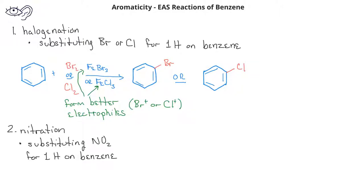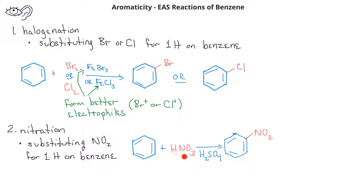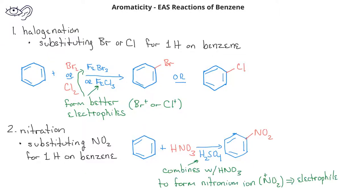Another reaction is nitration of benzene. This involves a benzene molecule reacting with a mixture of nitric acid and sulfuric acid, and it ends up substituting a nitro group, NO2, for one of the hydrogens on the benzene ring. The sulfuric acid combines with the nitric acid to form an electrophile known as a nitronium ion, and it's this nitronium ion that serves as the electrophile in the electrophilic aromatic substitution with benzene.